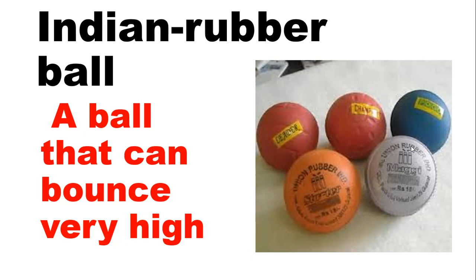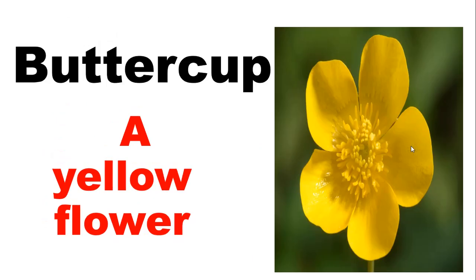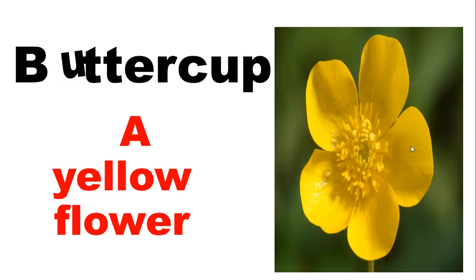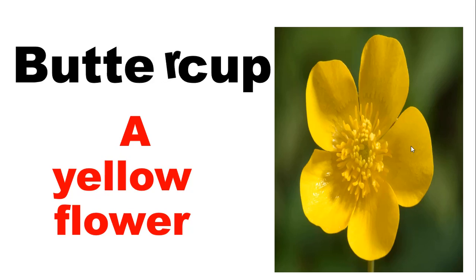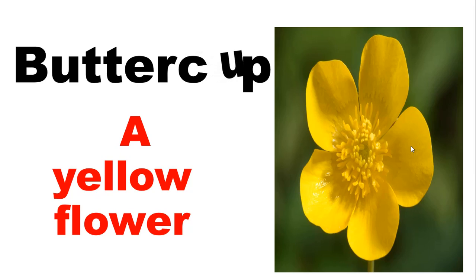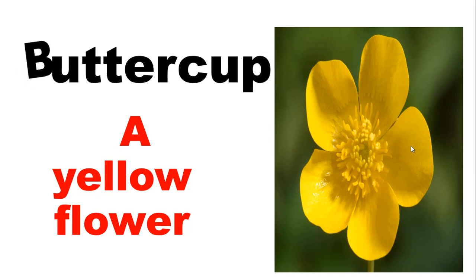Let's see the next word. Our next word is 'buttercup'. Let's learn the spelling: B, U, double T, E, R — Butter. C, U, P — Cup. Buttercup.